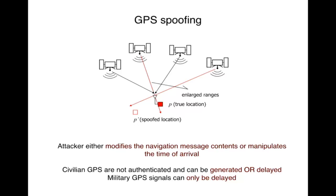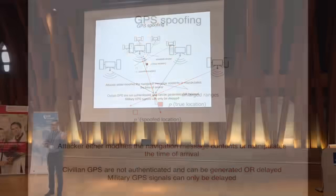Civilian GPS is not authenticated and can be generated or delayed. Military GPS can only be delayed because it's authenticated through secret spreading codes. However, military GPS relies on pre-shared keys with all receivers, which don't scale. That's why in a large percentage of military operations, civilian GPS is used as well — and I suspect that's what happened with the Iranian drone incident.